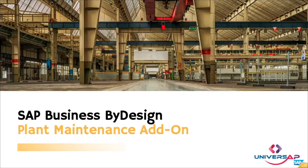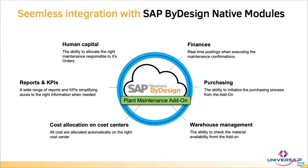Welcome to today's presentation about the Plant Maintenance add-on developed by Universe AP. The add-on is seamlessly integrated with the pre-delivered SAP Business by Design native modules: Finance, Purchasing, Warehouse Management, and Human Capital Management. It also comes with the feature of cost allocation on the right cost centers during confirmations of maintenance, as well as a large spectrum of reports and KPIs that stakeholders can use to extract all needed data from the system.